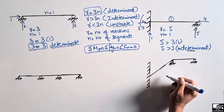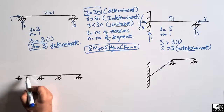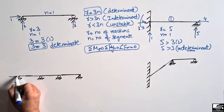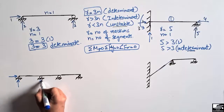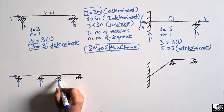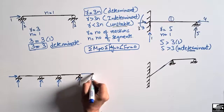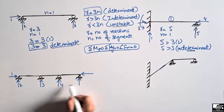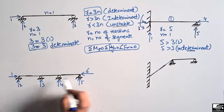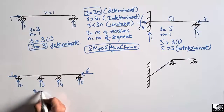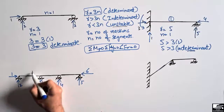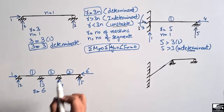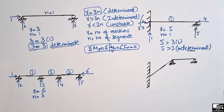Now for the third beam: it has a hinge support (vertical and horizontal load), a roller support (vertical load only), another roller support (vertical load only), and another hinge support (vertical and horizontal load). Counting the reactions: 1, 2, 3, 4, 5, 6 — so R equals 6. The beam has three segments, so n equals 3.